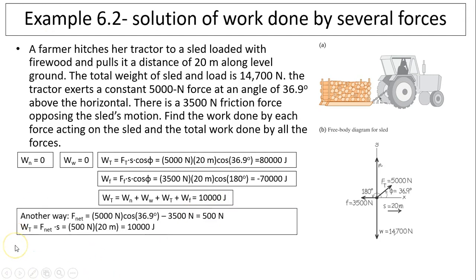There is another way for you to figure out the total work done. You can find the net force. Net force, in this case, up and down cancels because the sled is not moving up and down. The sled is in equilibrium in the vertical direction. The net force is only in the horizontal direction, which is 5,000 times cosine 36.9 minus 3,500, giving you 500 newtons. So you can use the net force times displacement, and you'll also get 10,000. As you can see, we did two ways and they are the same as we should.